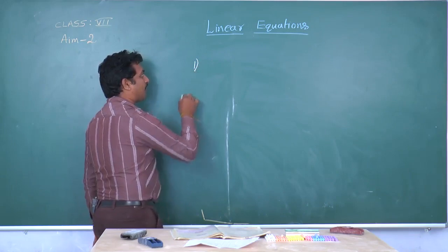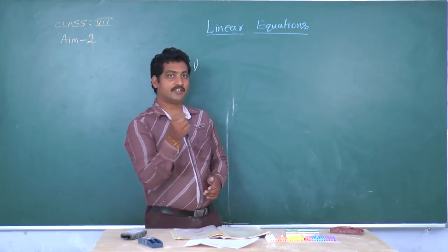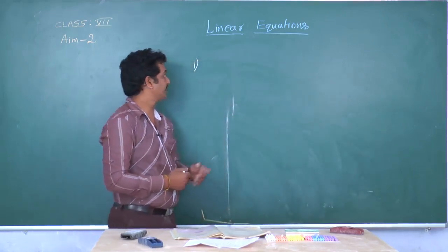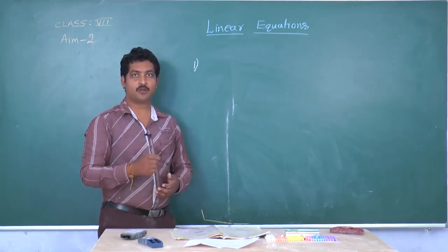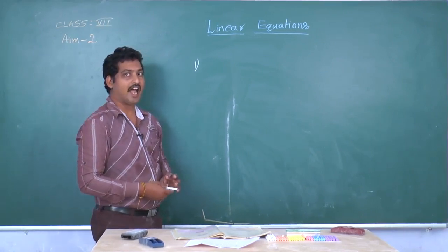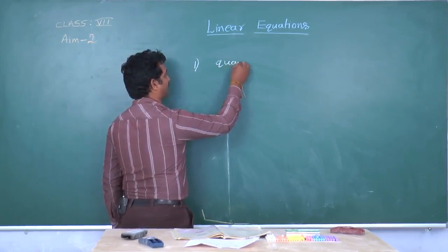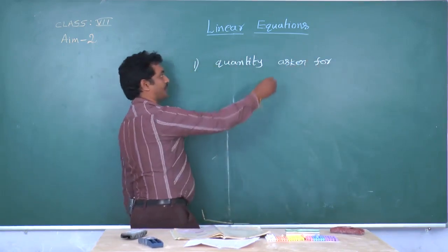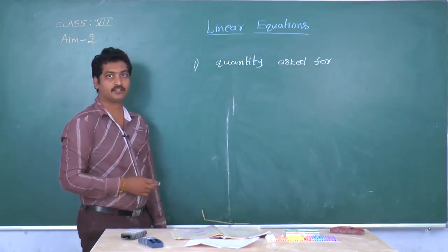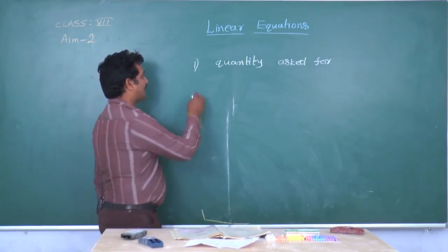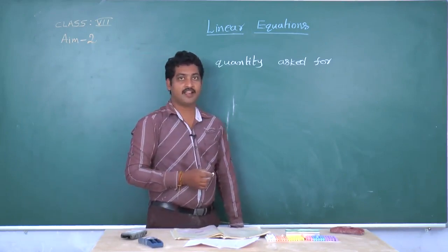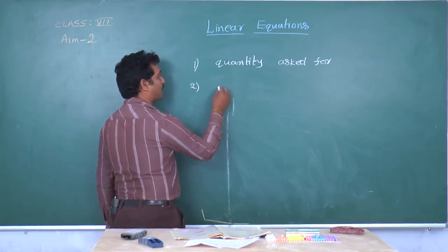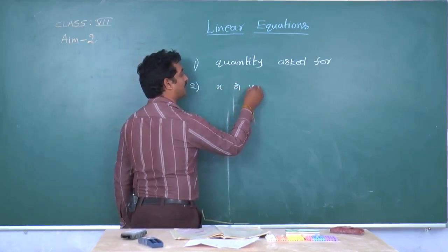Some steps need to be followed to solve verbal problems involving linear equations in one variable. The first step is we have to read the problem carefully and identify the quantity asked for. The second step is: denote that quantity asked for as a variable x, y, z, etc.